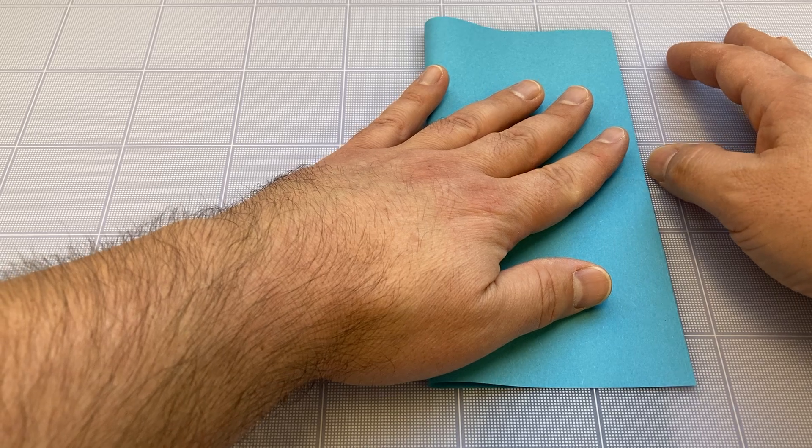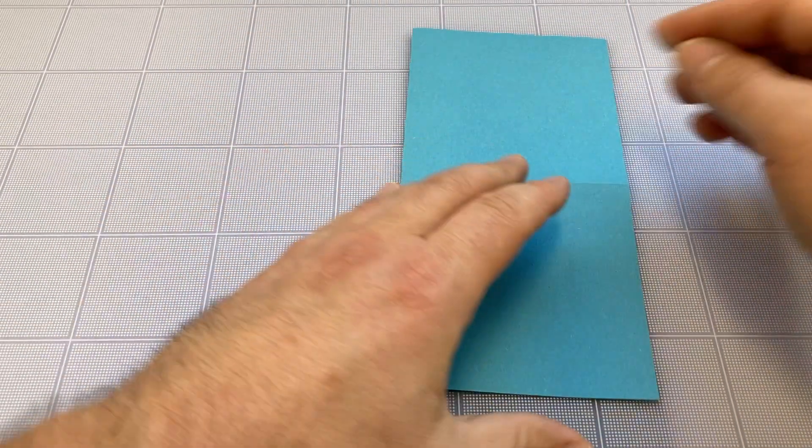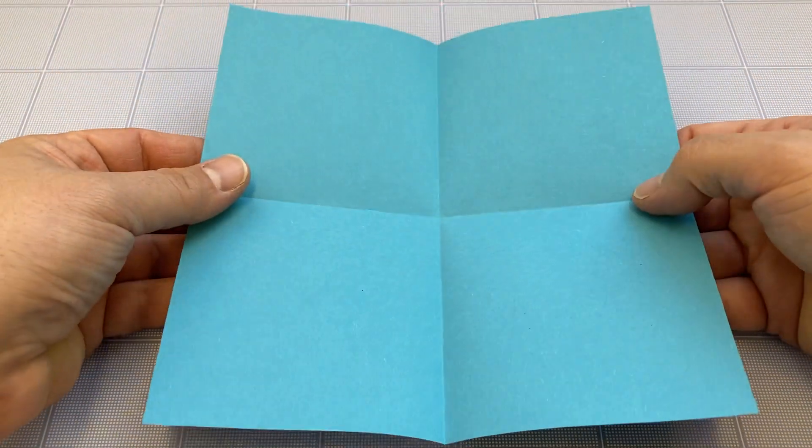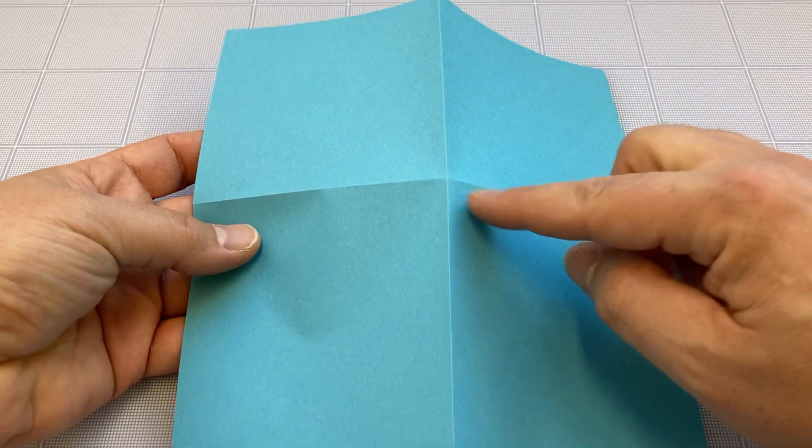Fold left edge over to the right edge, and that will give me a big plus sign in the middle of the paper. Then flip that over so now I've got all the mountains, the peaks standing up.